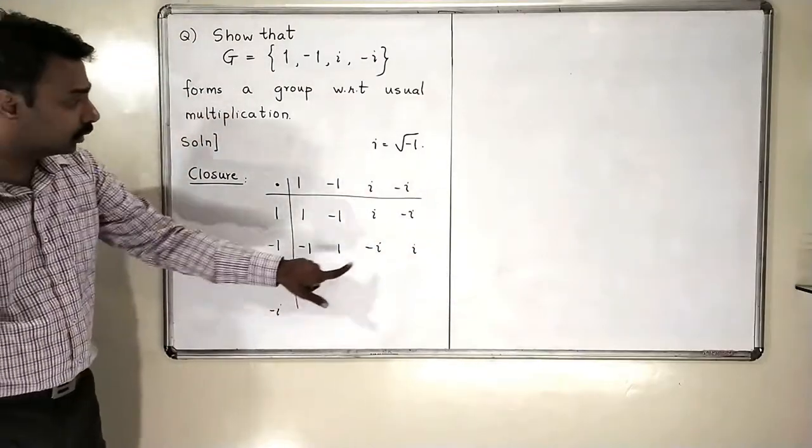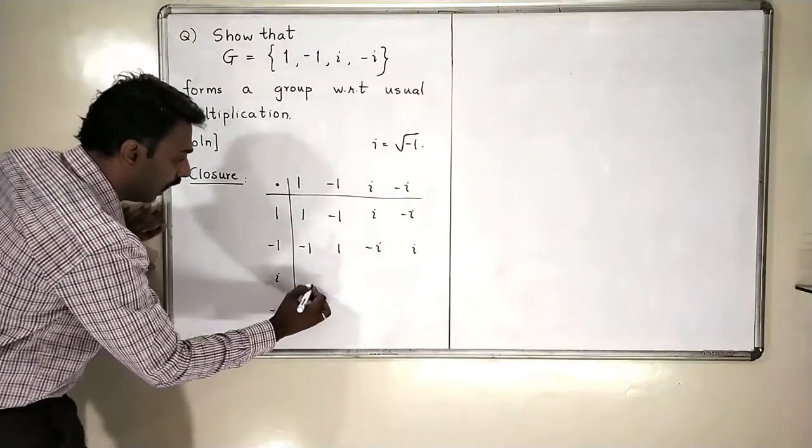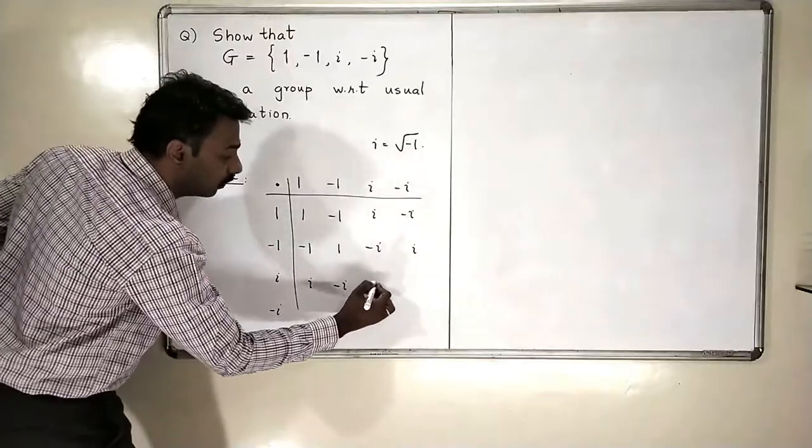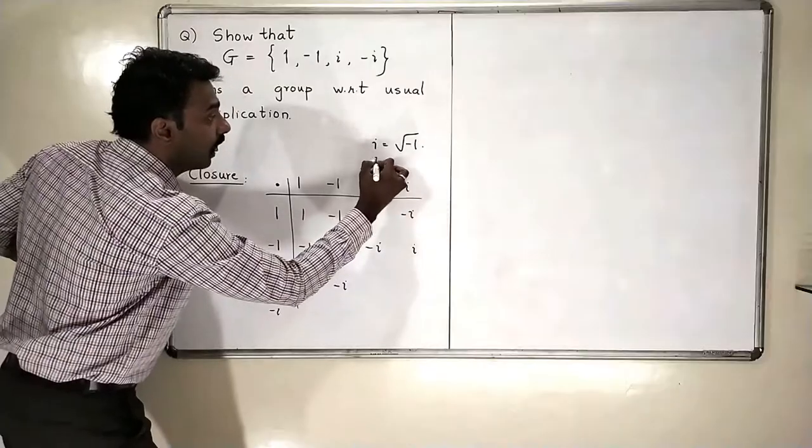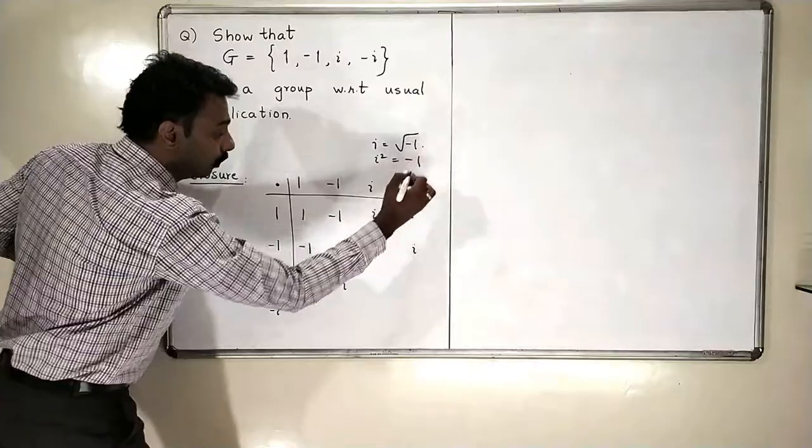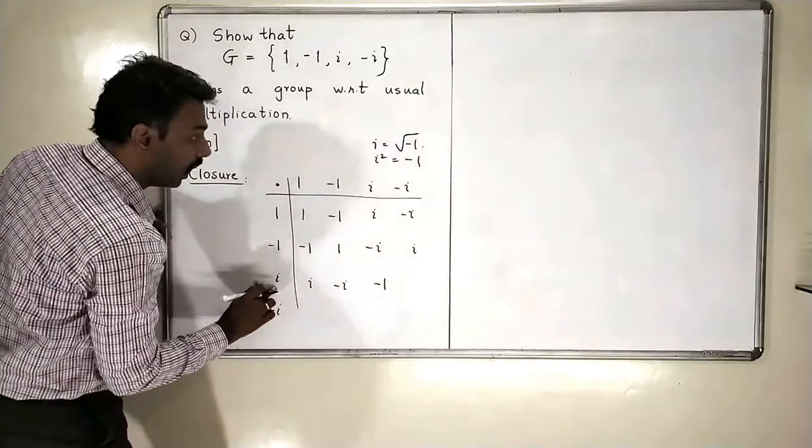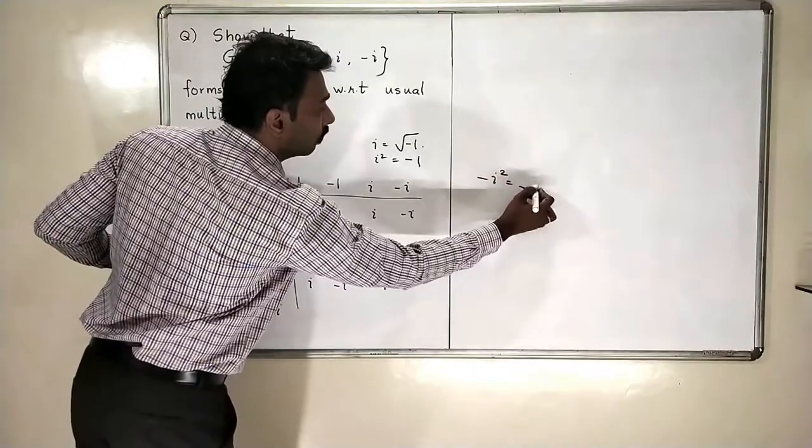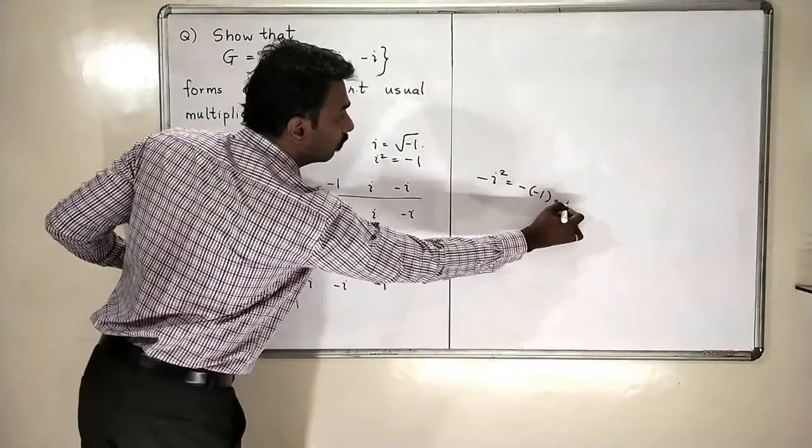When I multiply i to all of these elements, I will get i, minus i. i into i is i square, which is minus 1. i into minus i is minus of i square, minus of i square is minus of minus 1, so that is 1.